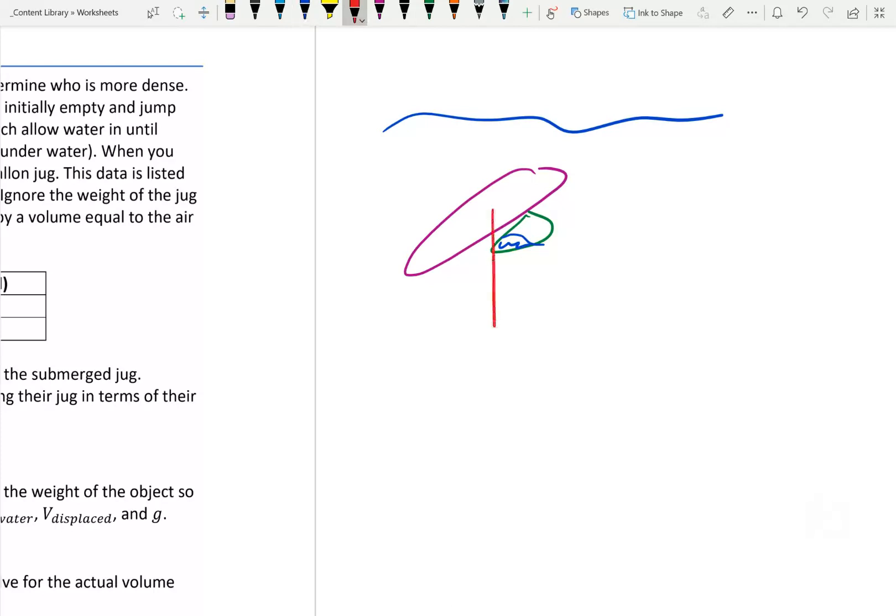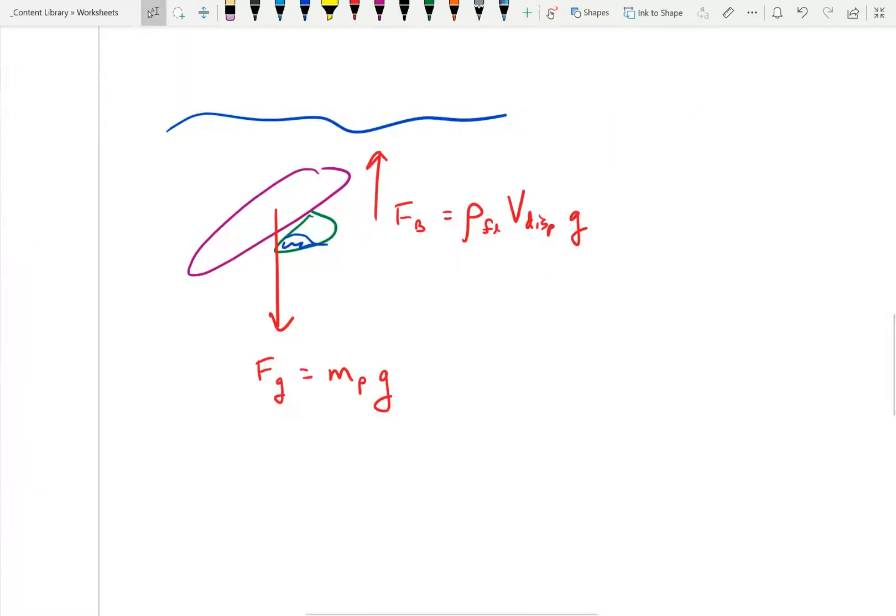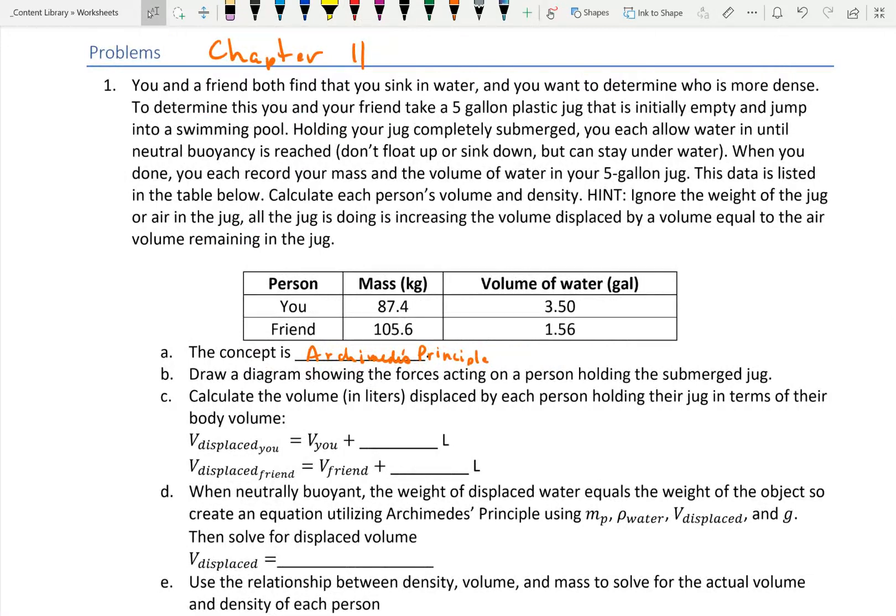Draw a diagram showing the forces acting on a person holding this submerged jug. Here's my person. Here's the jug that is going to be partially filled with water. If we look at the forces, I have a downward force due to gravity equal to the mass of the person times g. And I have an upward force of buoyancy equal to the density of the fluid, in this case water, times the volume displaced times g.